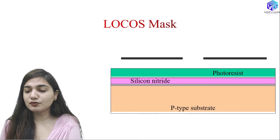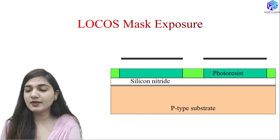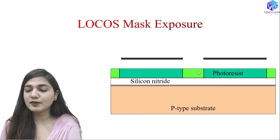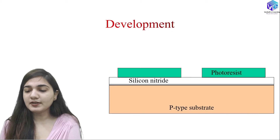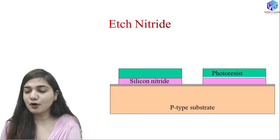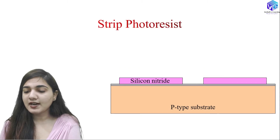With the LOCOS mask we remove the photoresist through alignment and exposure process — we expose the photoresist layer with UV rays, which changes the characteristics of the exposed photoresist so it is removed easily in the development process. This is how we make the mask. We then etch the nitride layer down to the p-type substrate and pad oxide layer. After that we remove the photoresist.